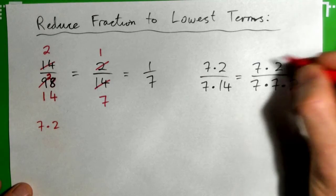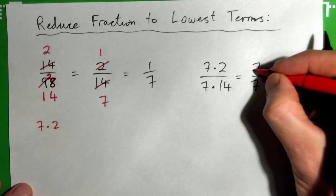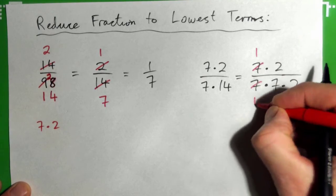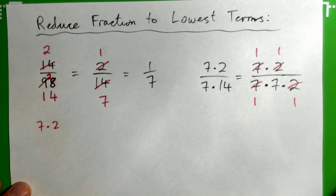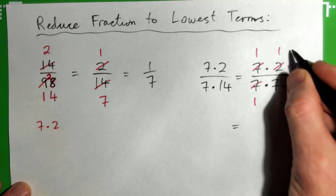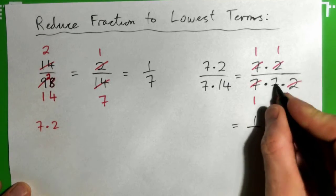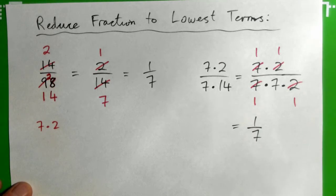And then you can cross-cancel common factors. 7 into 7 goes once here and here, 2 into 2 goes once here and here, and this gives us 1 times 1 is 1 over 1 times 7 times 1 is 7. So that's another way of doing it.